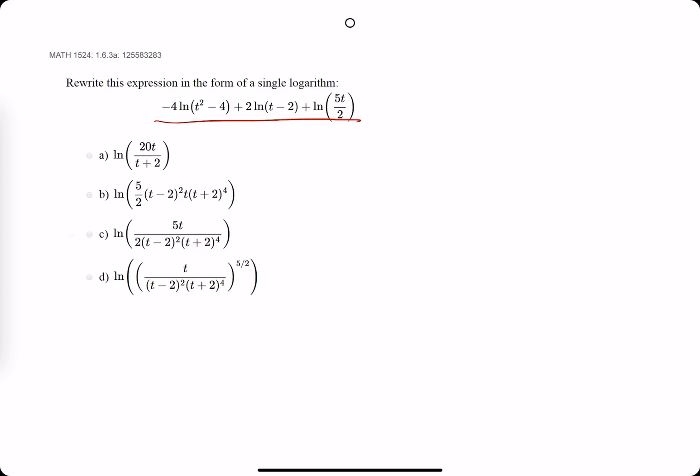The first thing I like to do is recognize that anything that has a positive or a negative will go to the numerator or the denominator, respectively. Simultaneously, I'm going to make everything that has a plus go to the numerator, and anything that has a minus go to the denominator, while also bringing up the coefficients to the exponents along the way.